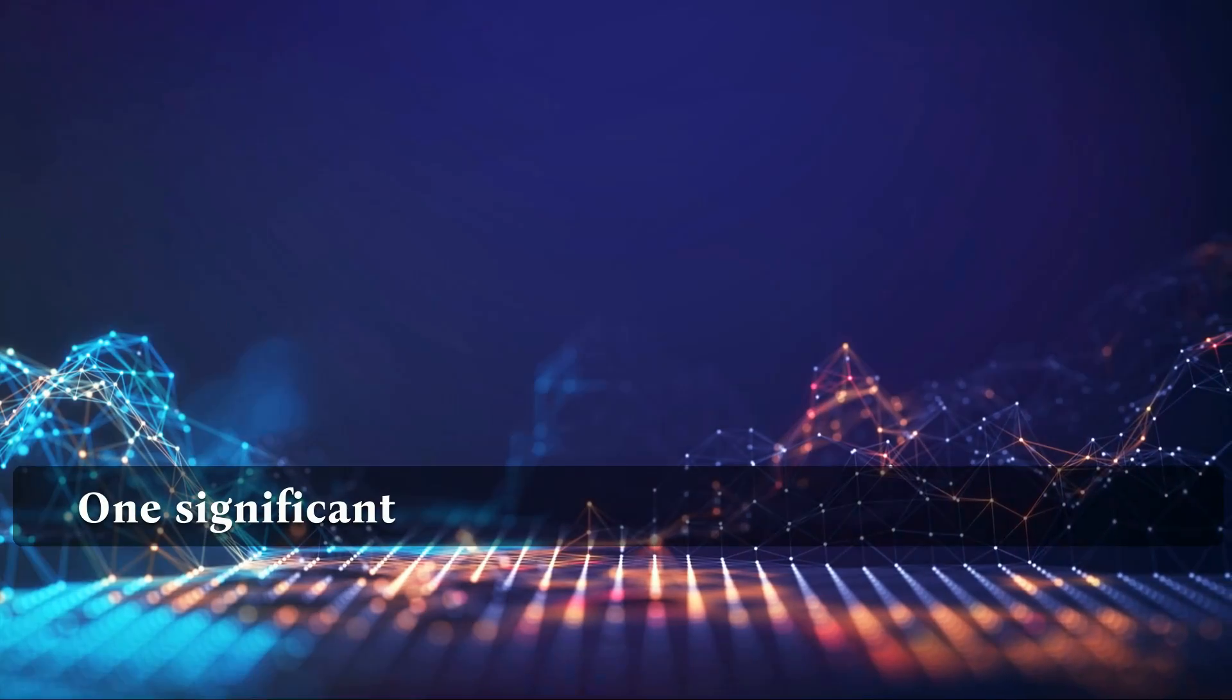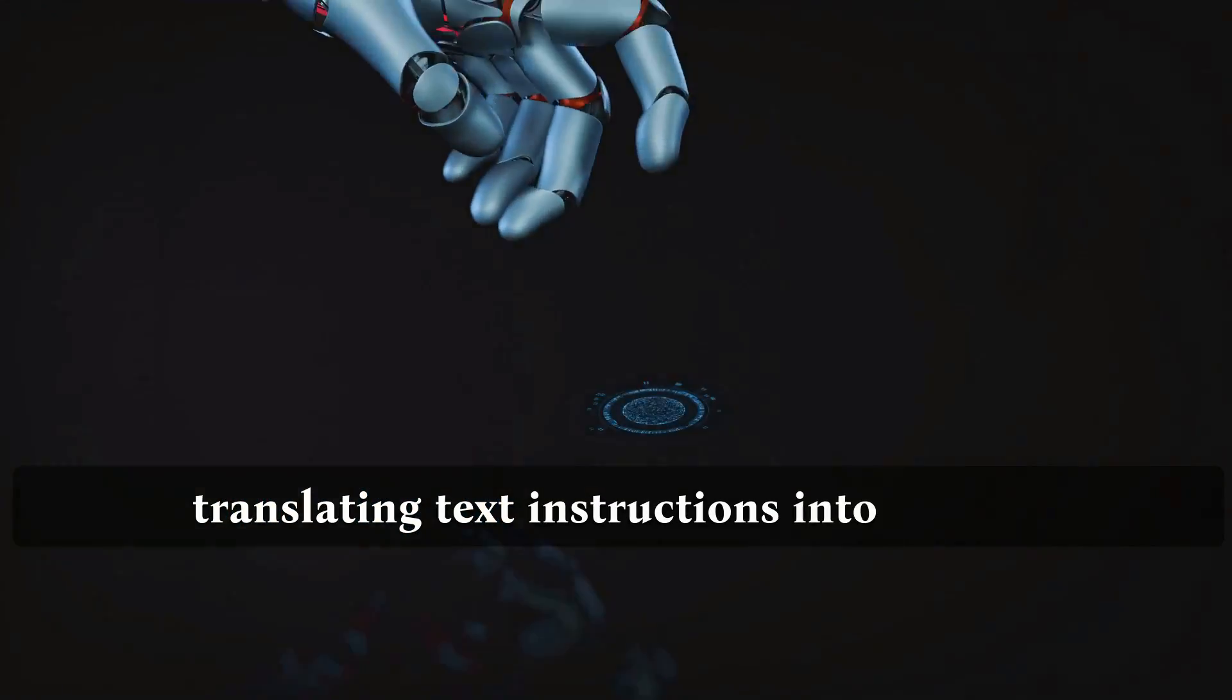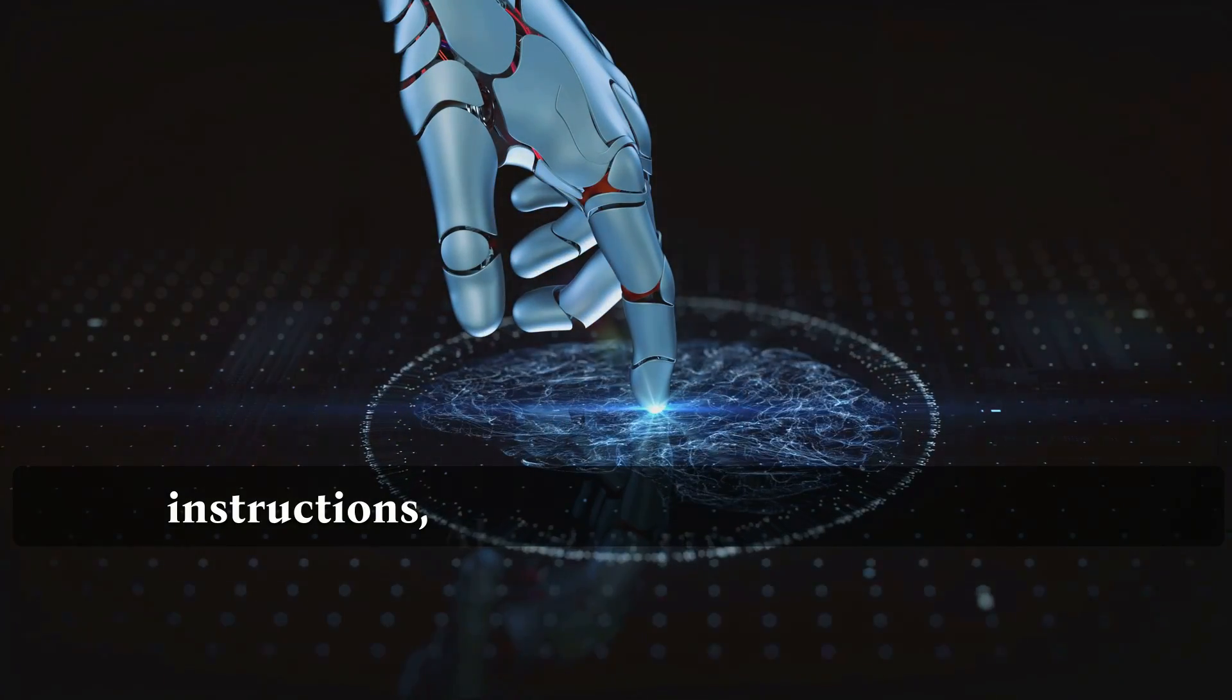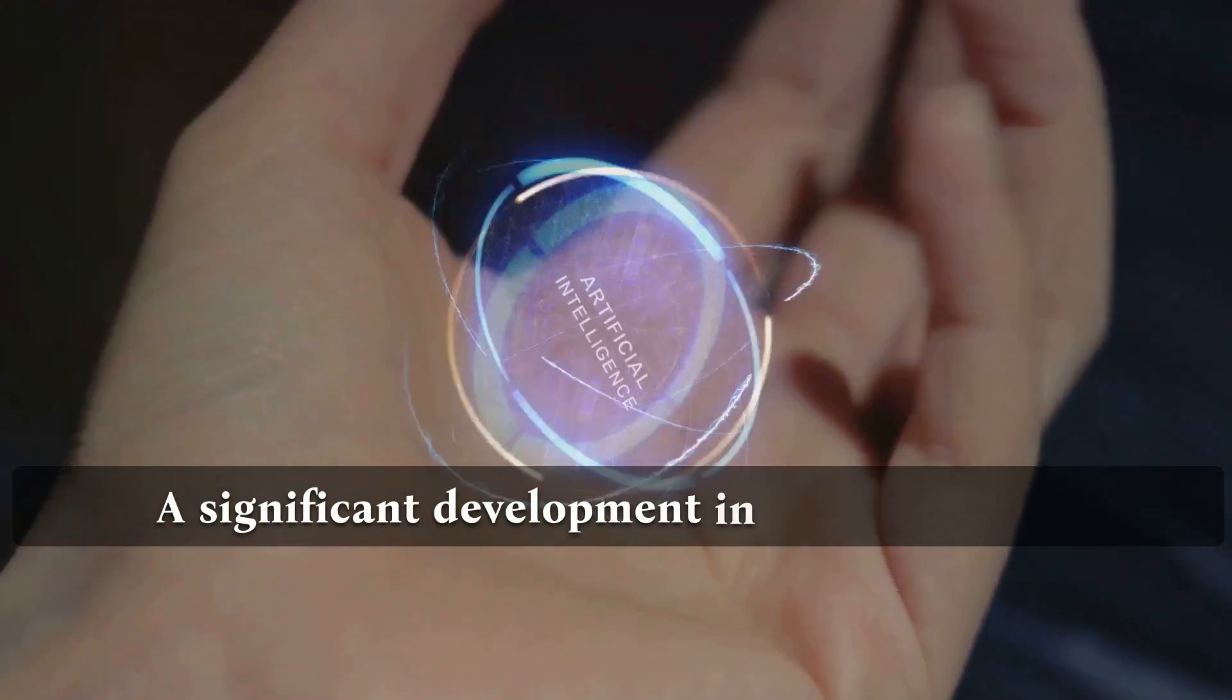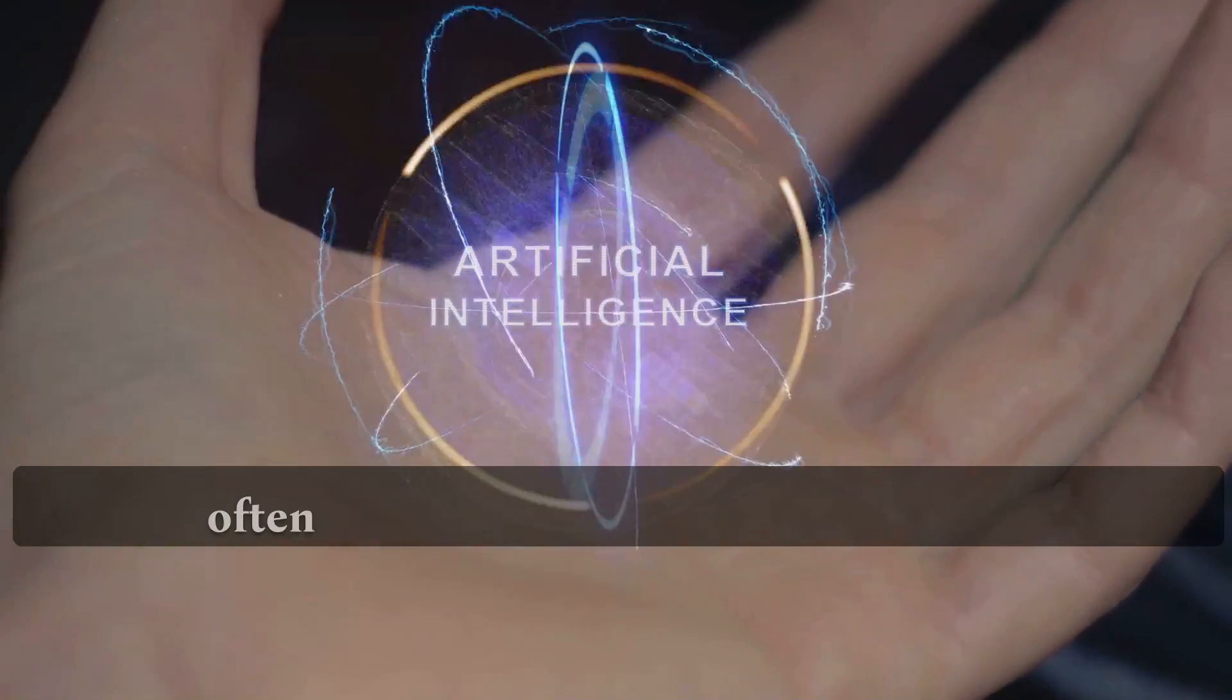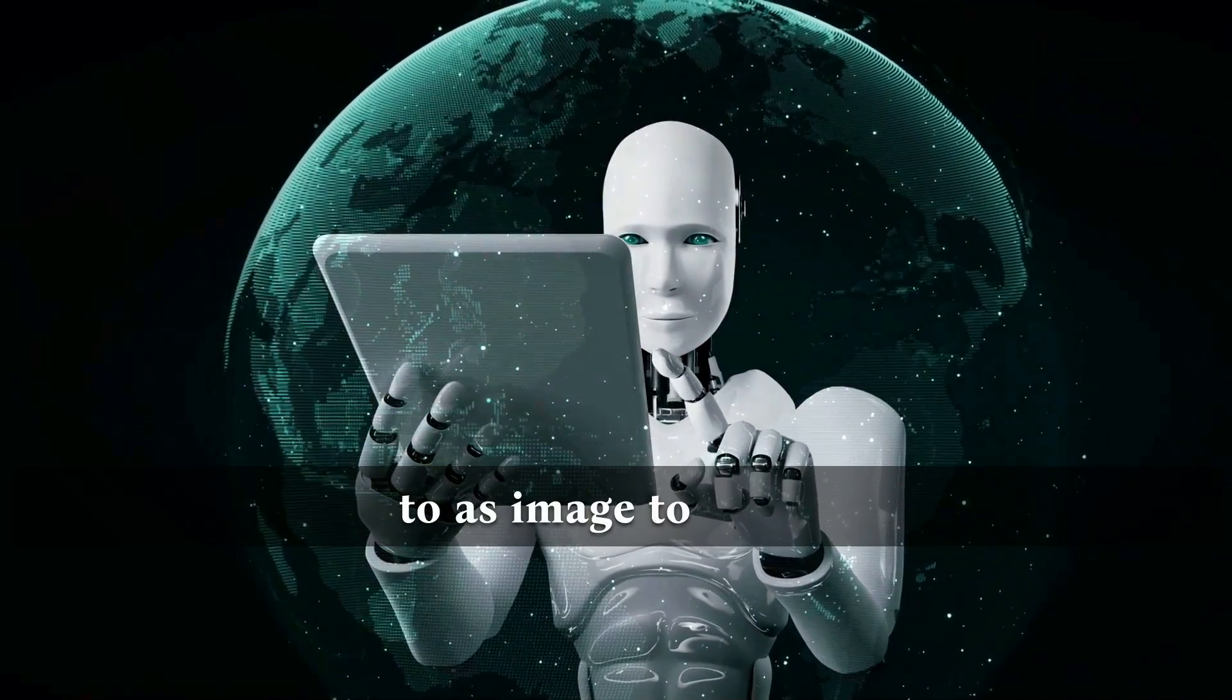One significant challenge in generating images with AI, in my opinion, lies in accurately translating text instructions into images. Due to the contextual nature of instructions, AI models may interpret them differently from what the user intended. A significant development in this field is the utilization of other images to provide color level, often in conjunction with text prompts. This approach is commonly referred to as image-to-image.